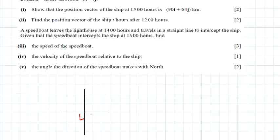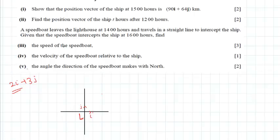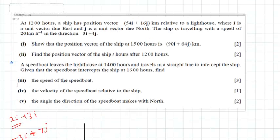Here, i represents a unit vector along the x-axis and j represents a unit vector along the y-axis. So if you take a point like (2, 2), you can write the position vector as 2i plus 2j. Similarly, 2i plus 3j represents 2 units horizontally and 3 units vertically. And minus 3i plus 7j represents 3 units left of the lighthouse and 7 units up. Negative j is down, positive j is up, and positive i is right, negative i is left.